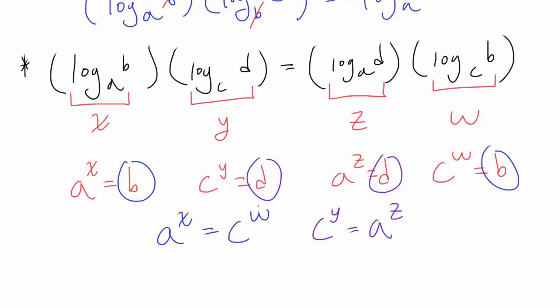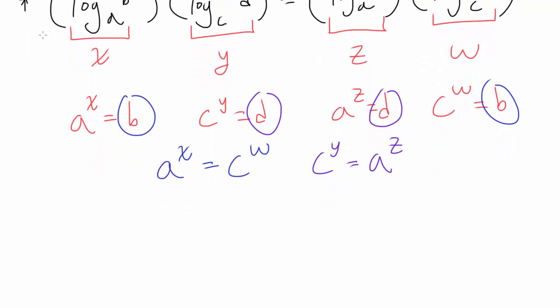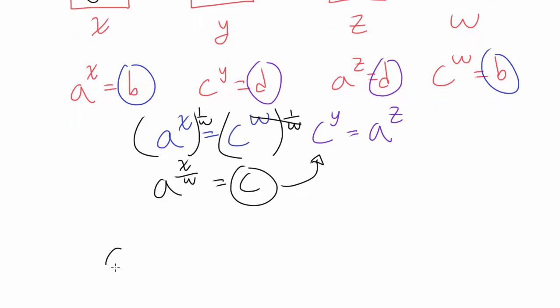What can we do from this? Look at this. You have A to the x equals C to the w, so why don't we exponentiate each side by 1 over w to cancel this out. Then you have A to the x over w equals C, and you can substitute this right into C to the y. You know C equals A raised to x over w, and you're raising this to the y power, and you should get A to the z.